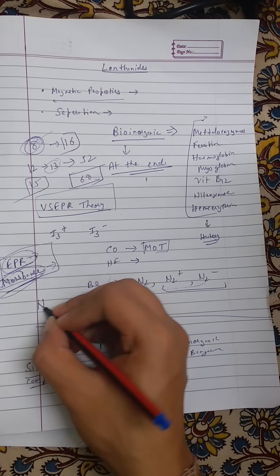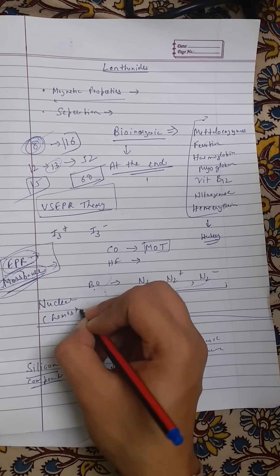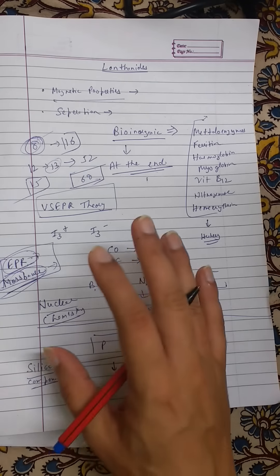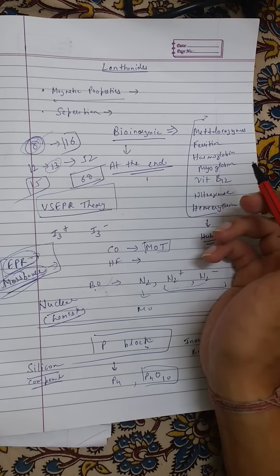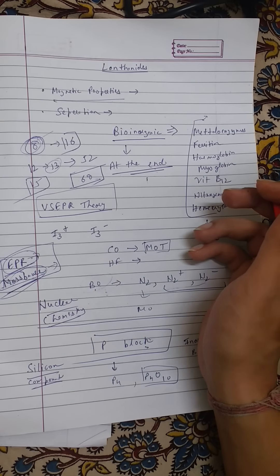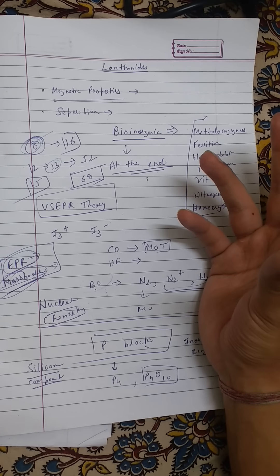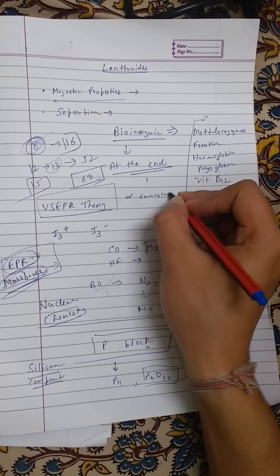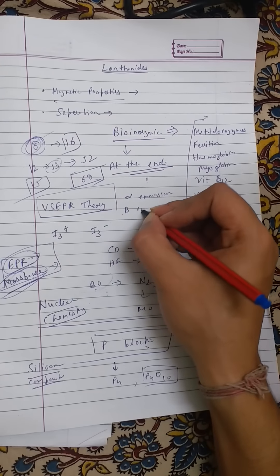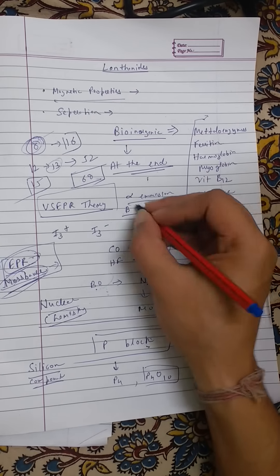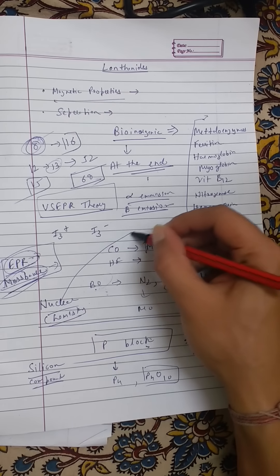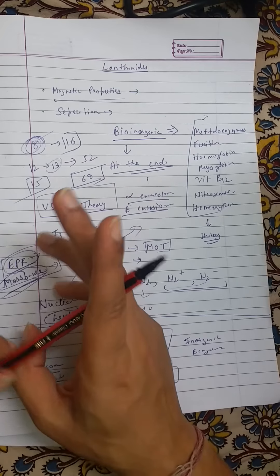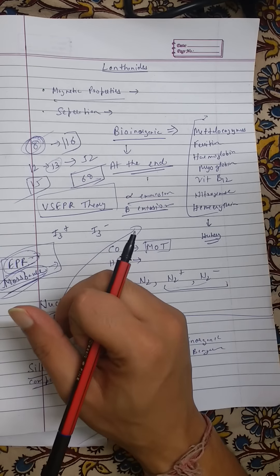Nuclear chemistry is part of the inorganic portion and has eight-mark questions, but it's a vast and random topic with no clear pattern. I recommend only knowing the basics: what happens during alpha emission and beta emission in terms of protons, neutrons, and electrons lost. That will take about five minutes to understand. Beyond that, the questions are too unpredictable to prepare for.